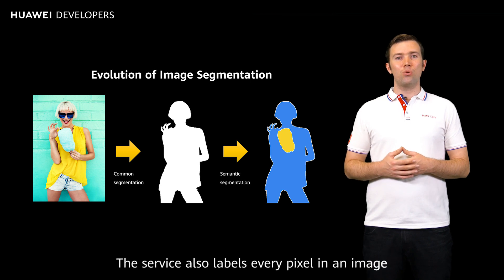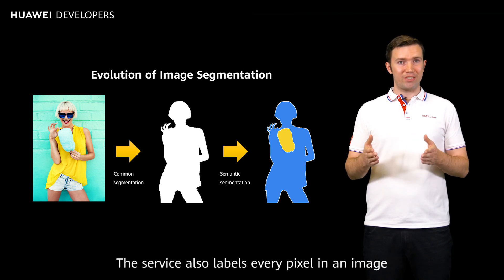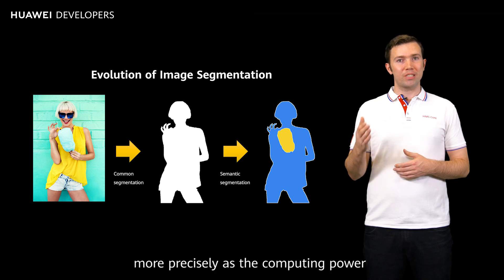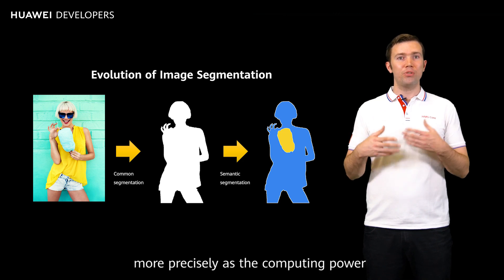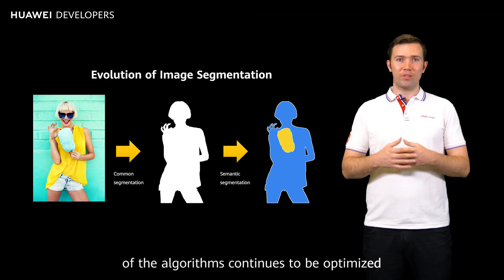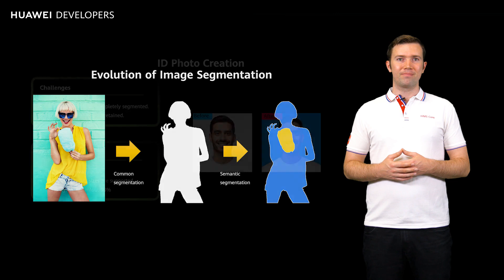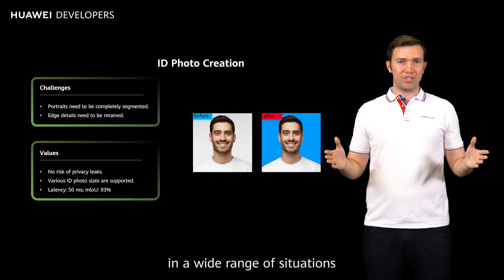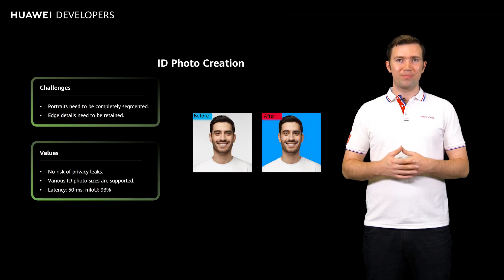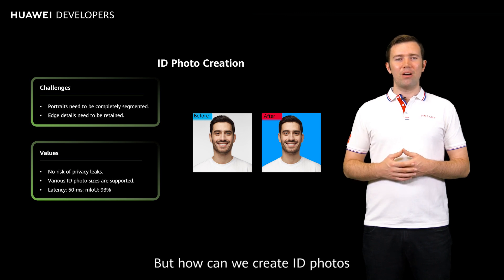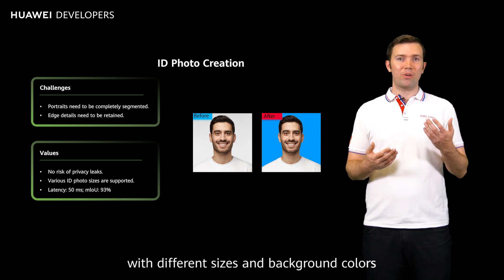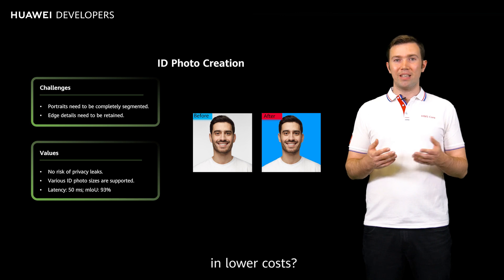The service also labels every pixel in an image, which means you'll be able to segment it more precisely as the computing power of the algorithms continues to be optimized. Image segmentation is useful in a wide range of situations. For example, ID photos — but how can we create ID photos with different sizes and background colors at lower costs?